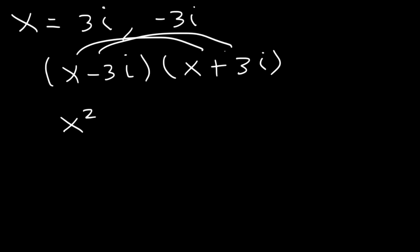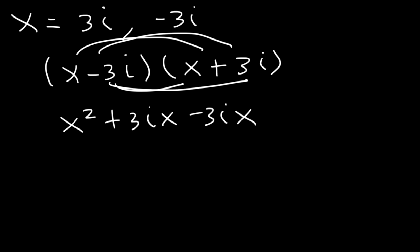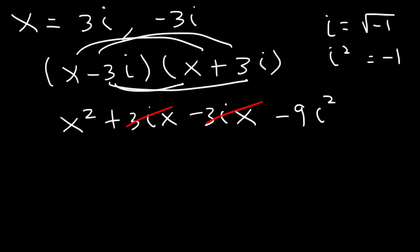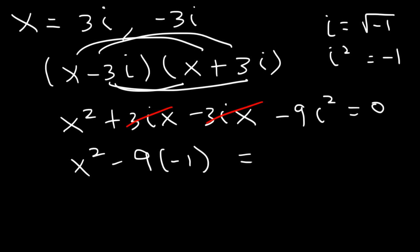Expanding: x squared, then 3ix and negative 3ix — those cancel. Negative 3i times positive 3i: negative 3 times 3 is negative 9, and i times i is i squared. Since i squared equals negative 1, negative 9 times negative 1 is positive 9. So the final answer is x squared plus 9 equals 0.